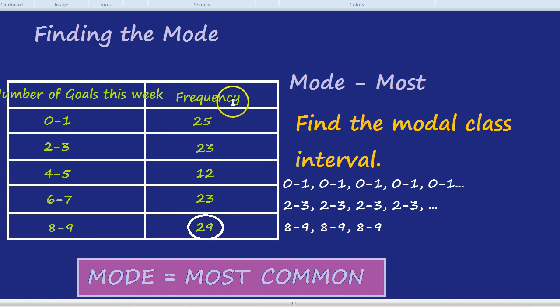So when you're given the frequency, you can simply look at the frequency to find out which is the mode. When you just have the numbers all in a long line, you have to work it out yourself by seeing which one is the most common. But when you're given the frequencies, you can simply look at which one is the biggest. And so 8 to 9 is indeed the mode.